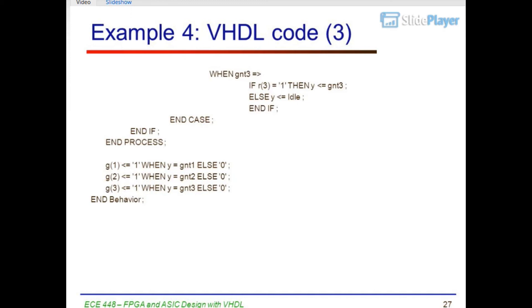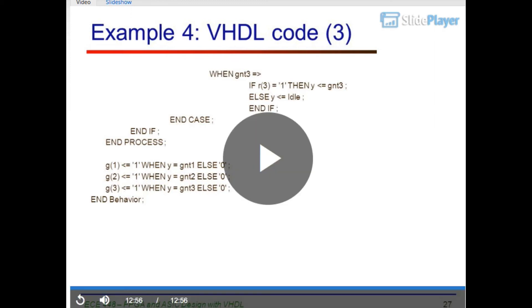When GNT3 => if R3 = '1' then Y <= GNT3; else Y <= idle; end if. End case. End process. G1 <= '1' when Y = GNT1 else '0'. G2 <= '1' when Y = GNT2 else '0'. G3 <= '1' when Y = GNT3 else '0'. End behavior. EKI-448, FPGA and ASIC Design with VHDL. Thank you.